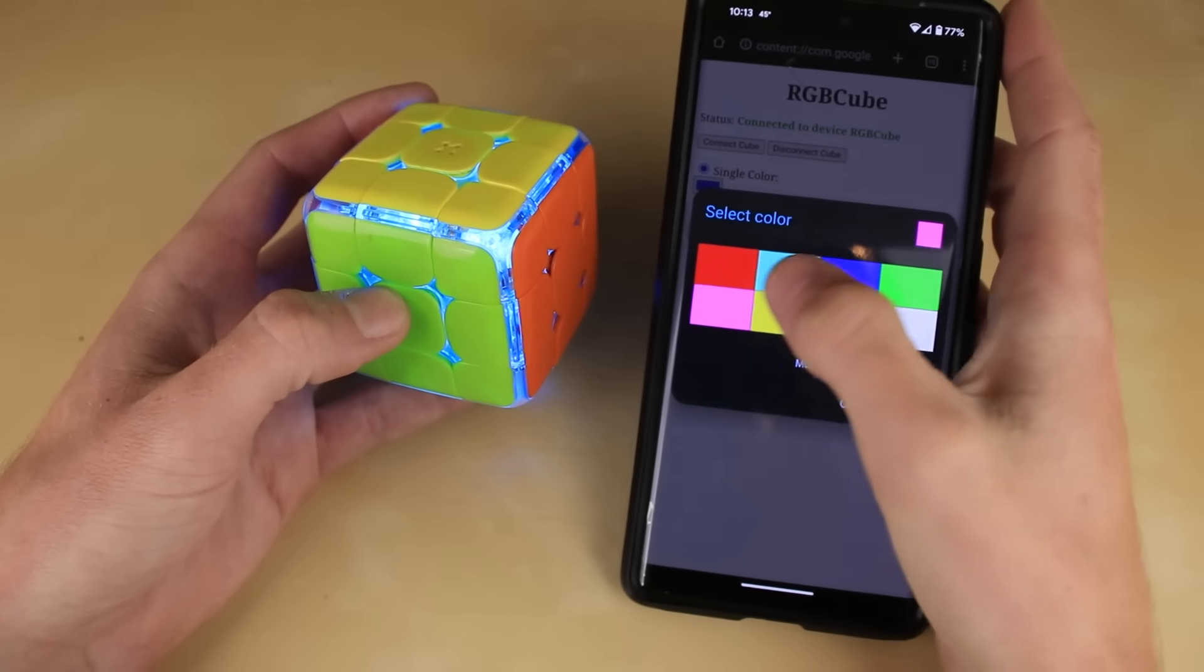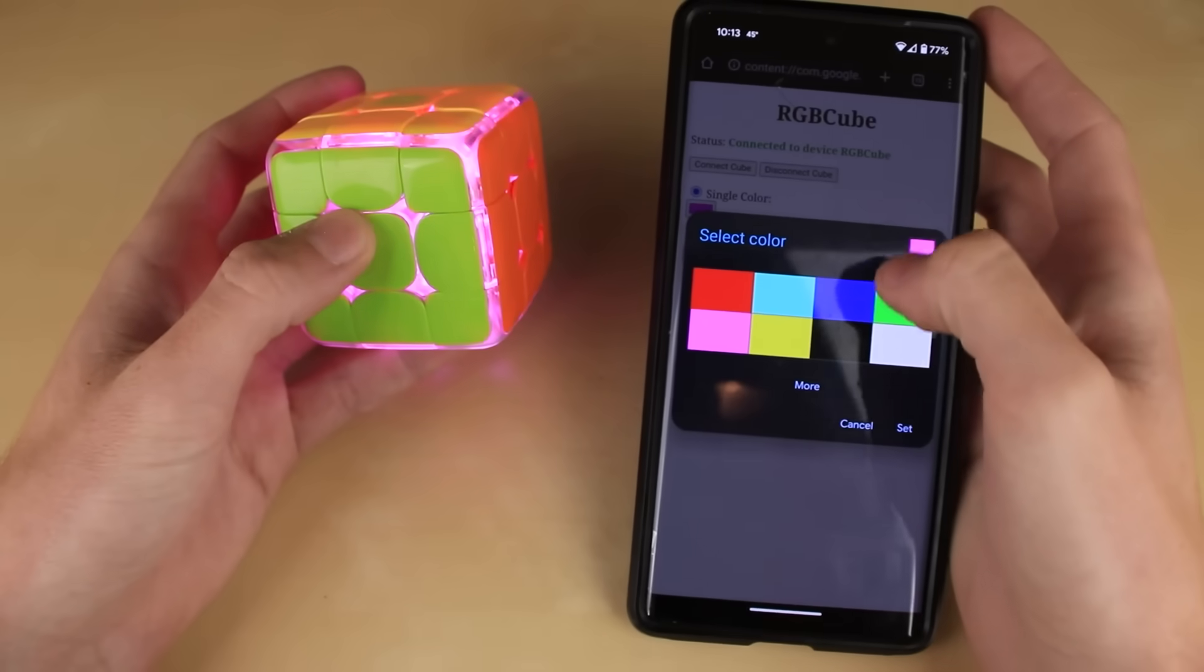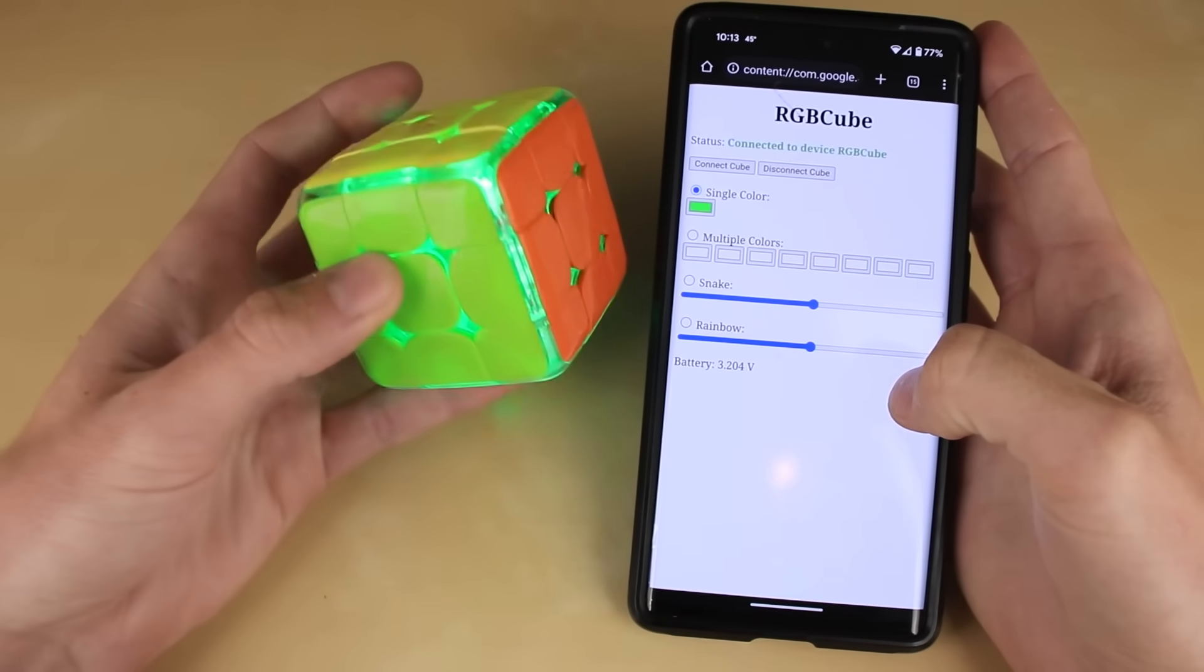Likewise, we can choose any of those other colors from the list. So how about bright pink? There we go. The cube is pinked, or maybe green. There we go. But wait, it just gets cooler from there.